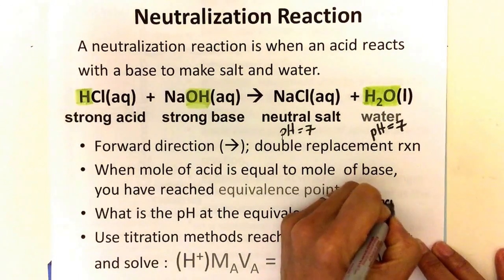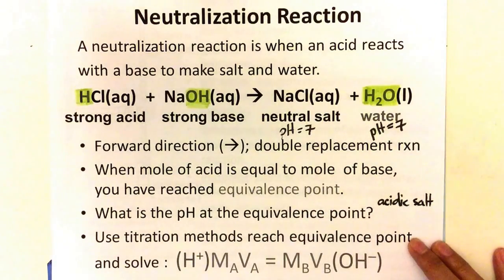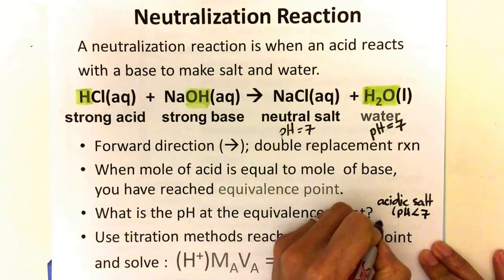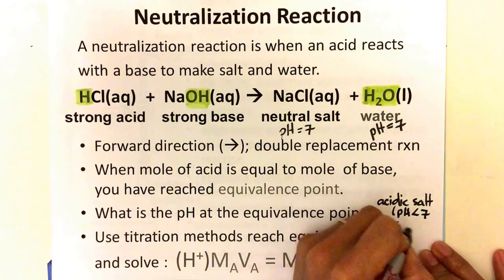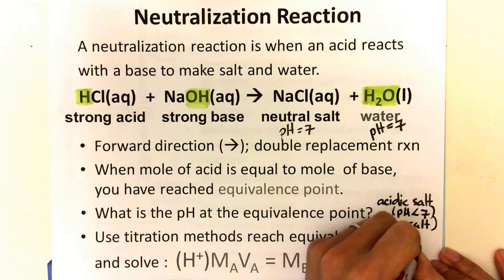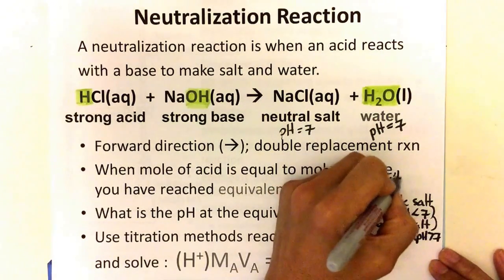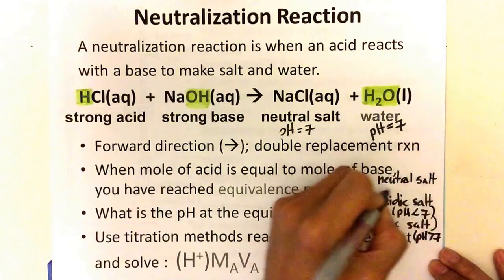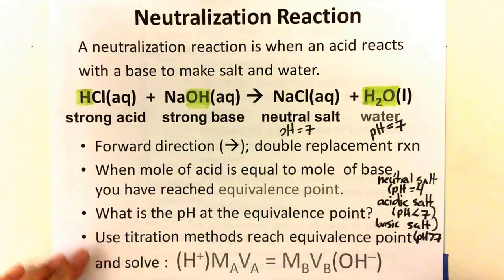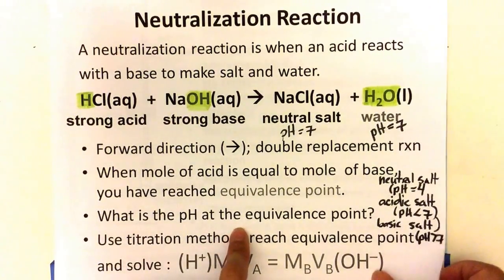If the salt is acidic, the pH we know is going to be less than 7. If the salt is basic, the pH is greater than 7. Like we see above, pH is equal to 7. So depending on what the salt is and whether the salt is acidic, basic, or neutral, the pH at equivalence point will vary.